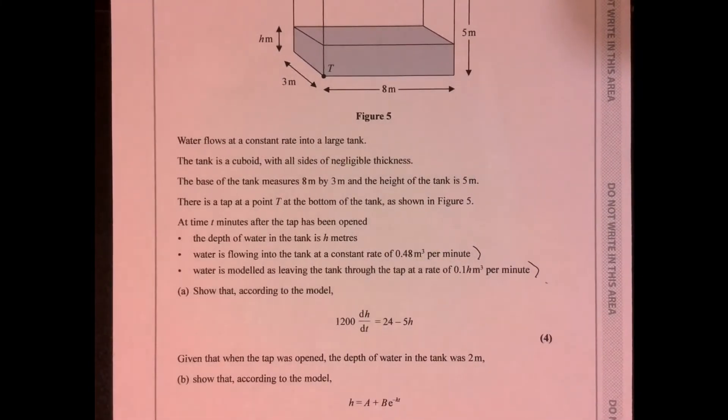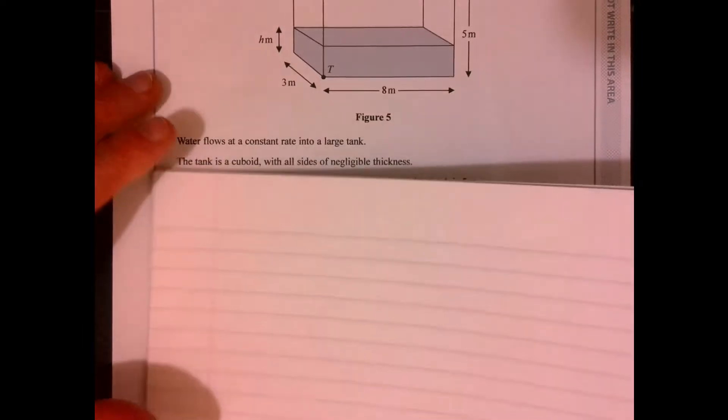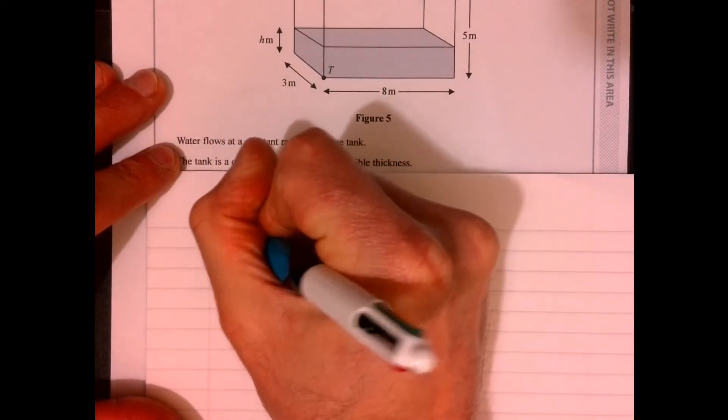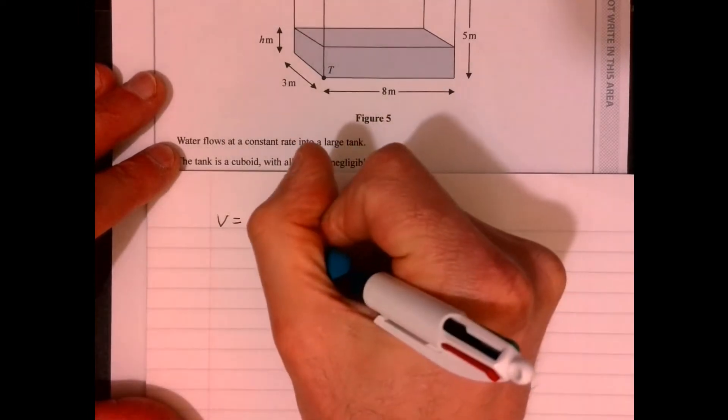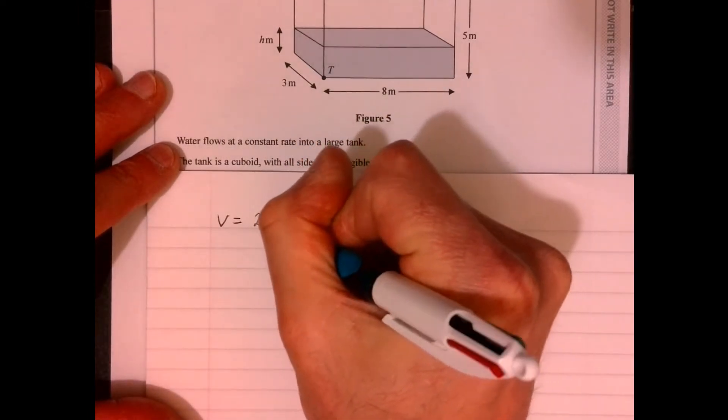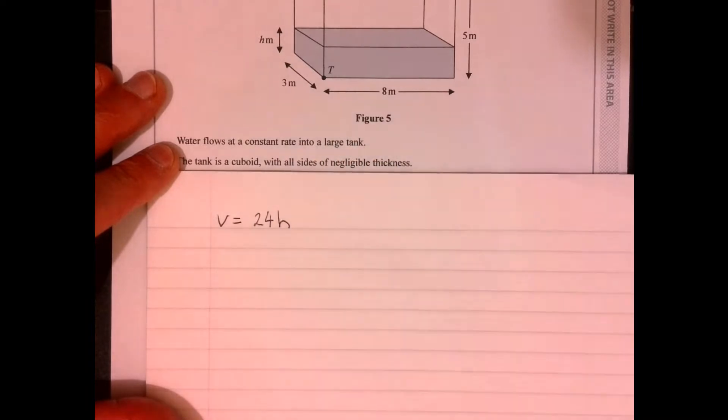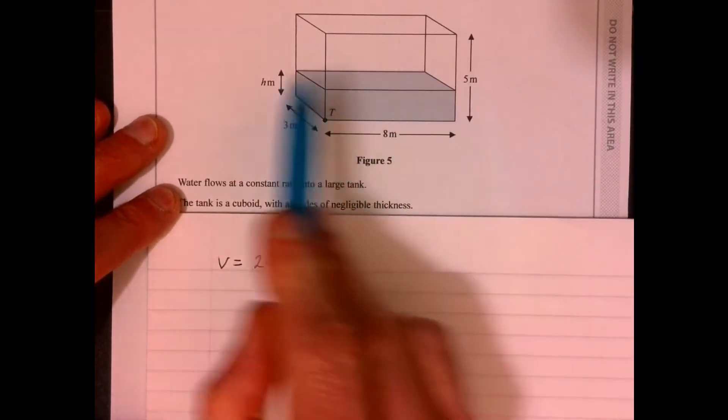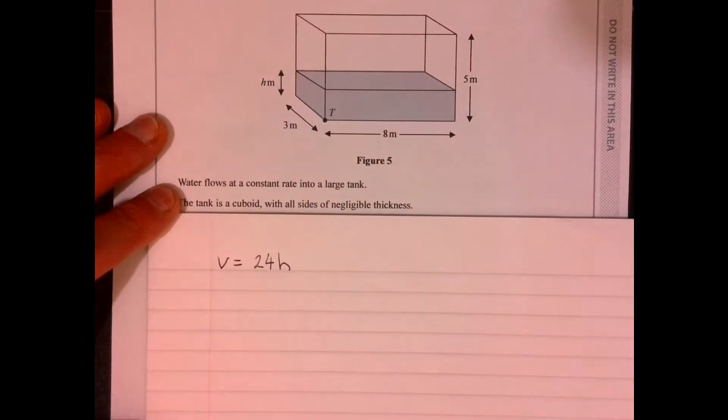We're told a little bit of information, so the key bit of information is these two things just here. So let's write down what we know. We know the volume of the water is 24 times the height, 3 times 8 times the height. So we've got that bit.